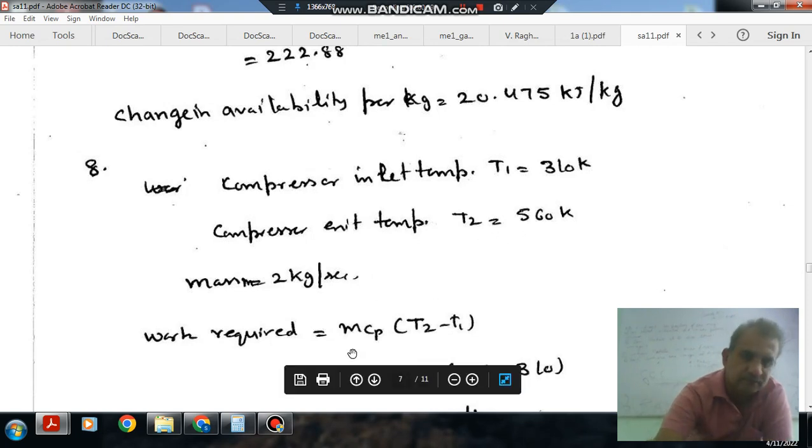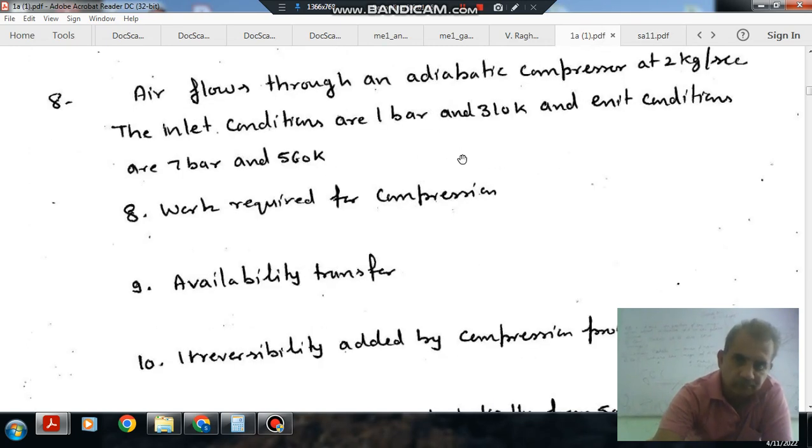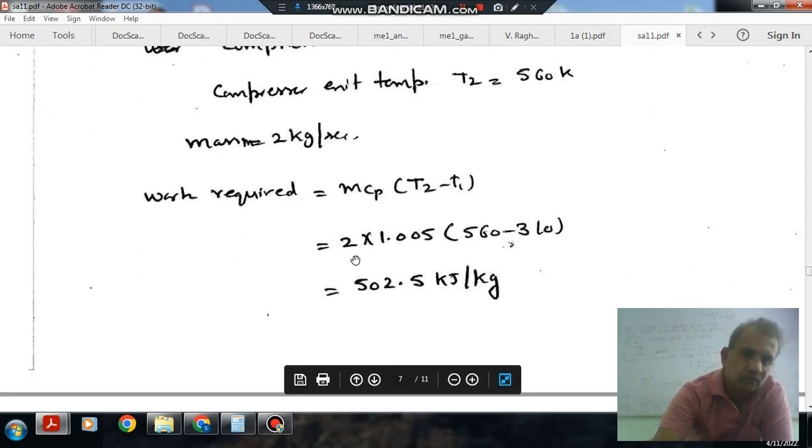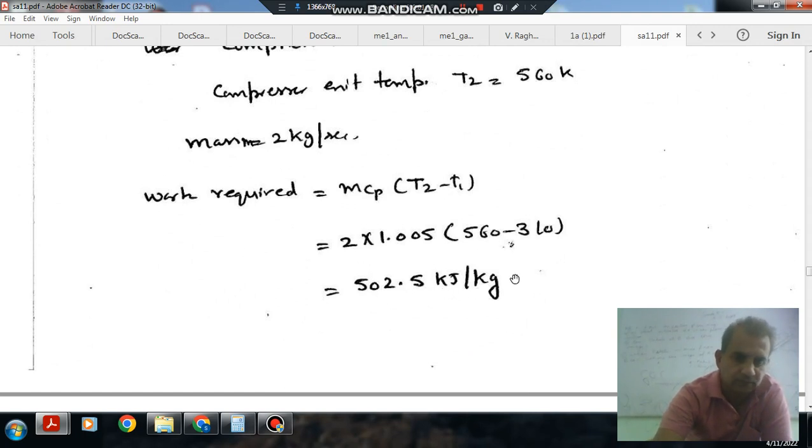So, the work required is MCP(T2 minus T1). CP is given as 1.005. So, 2 into 1.005, 560 minus 310. So, that is 502.5 kJ per kg. That is the answer to the first question.